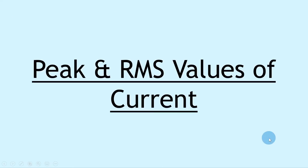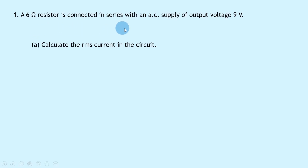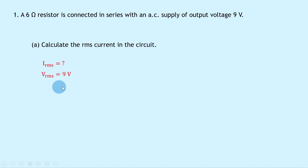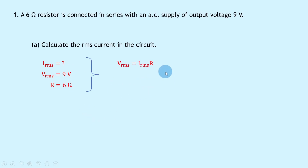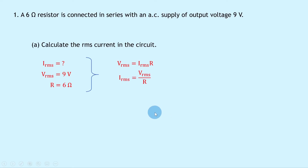Now on to the two examples for current. Question one says that a 6 ohm resistor is connected in series with an AC supply of output voltage 9 volts. Part A says to calculate the RMS current in the circuit. Writing down what we know, we're trying to find Irms. We know that Vrms is 9 volts and the resistance R is 6 ohms. We can use Ohm's law, V equals IR, using RMS values. Rearranging for Irms, we divide both sides by R, giving Irms equals Vrms over R. Substituting in gives 9 divided by 6, which is 1.5 amps.